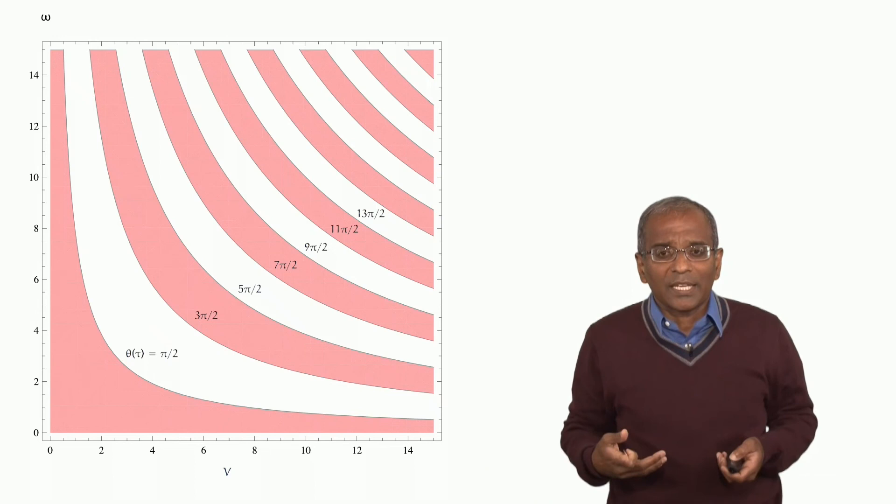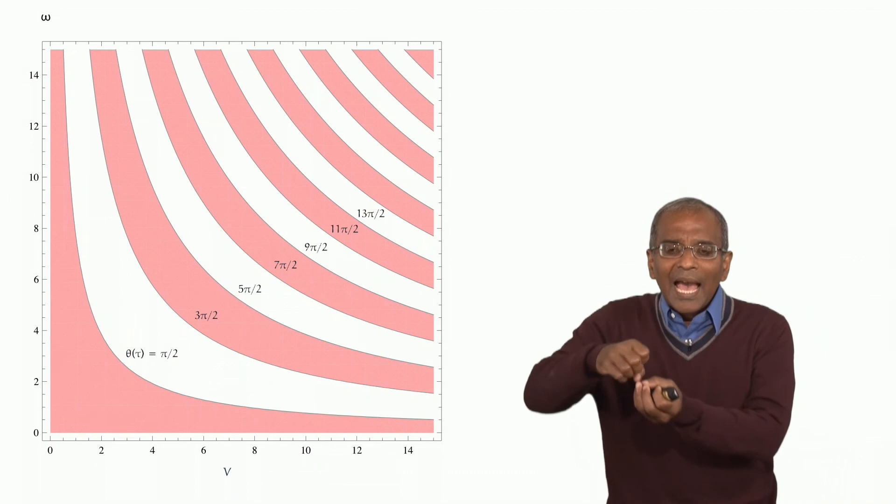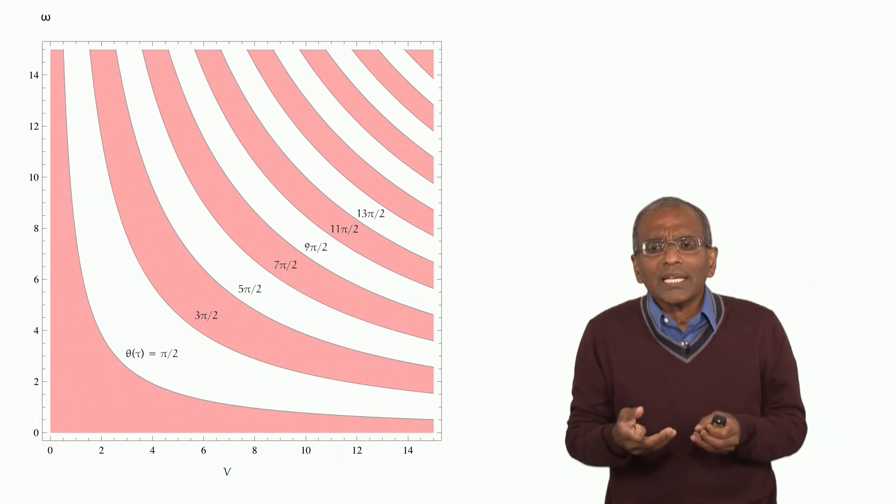So let's go ahead and redraw this picture by foreshortening the velocity axis to the region of velocities of interest, say up to about 5 meters per second, and stretching out the angular velocity axis to the region again of interest of around 250 to 300 radians per second.